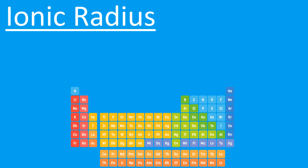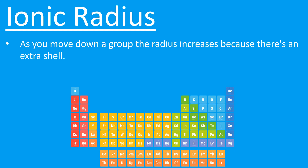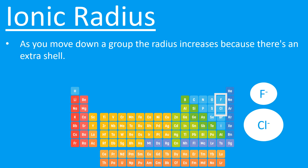Just as we can use the periodic table to predict charge, we can also use it to predict radius. As you go down a group, the radius increases because there are more shells. For example, fluoride is F− and chloride is also −1, but chloride has a bigger radius. That means fluoride has a bigger charge density because it's smaller with the same charge, so fluoride is more attractive than chloride and will form stronger ionic bonds.